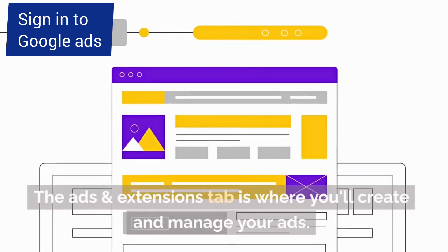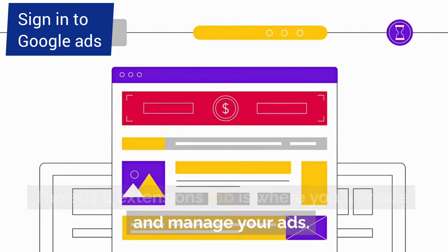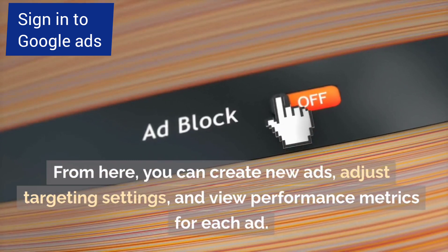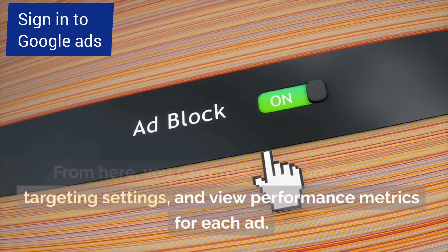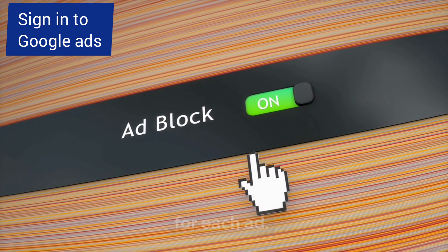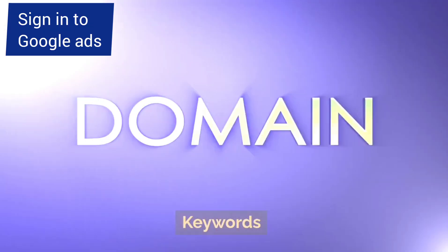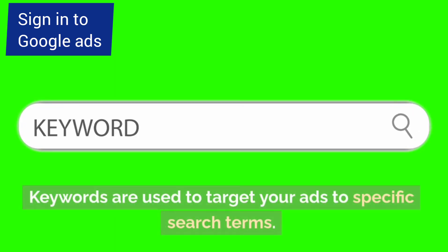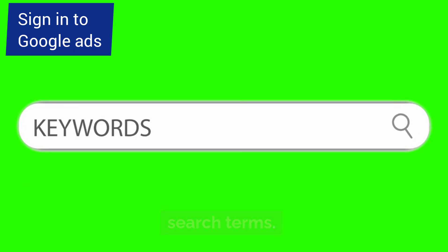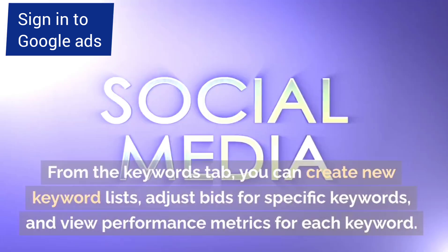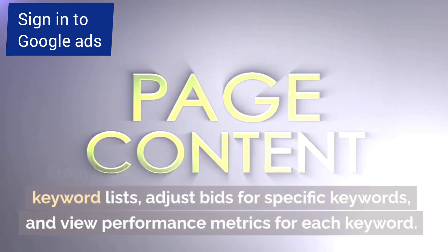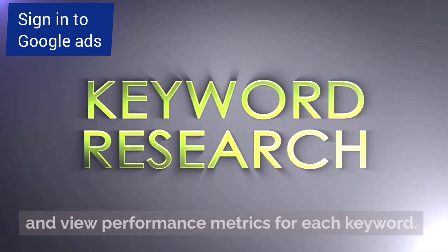The Ads and Extensions tab is where you'll create and manage your ads. From here, you can create new ads, adjust targeting settings, and view performance metrics for each ad. Keywords are used to target your ads to specific search terms. From the Keywords tab, you can create new keyword lists, adjust bids for specific keywords, and view performance metrics for each keyword.